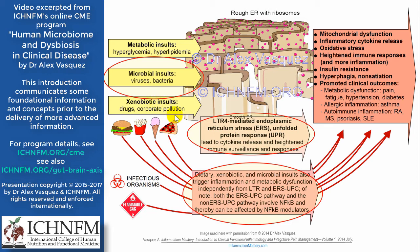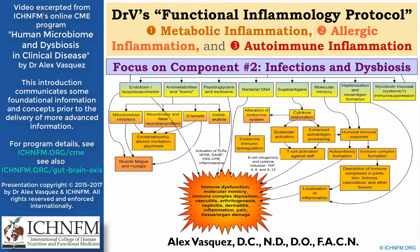Independent from this pathway involving endoplasmic reticulum stress and the unfolded protein response, other pathways can also get activated to contribute to the clinical presentation of various disease phenotypes. That was the quick overview and introduction to the clinical application of the functional inflammology protocol, which I find to be very effective for the correction of metabolic inflammation, allergic inflammation, and autoimmune inflammation — the three types of inflammation we see in clinical practice.